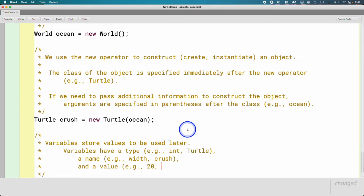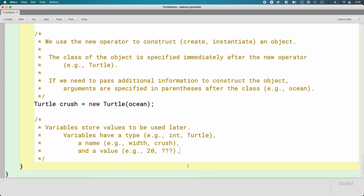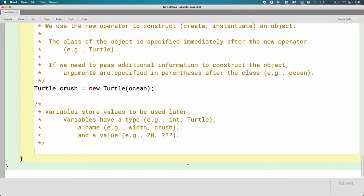If its type is that of an integer, its value could be like 20. If its type is that of a class type, what is its value? That's a question worth exploring. What is the value of the variable crush here? We're going to focus on that a lot today.